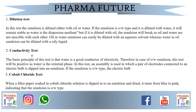Moving to the conductivity test: the basic principle is that water is a good conductor of electricity. In the case of an O/W emulsion, the test is positive as water is the external phase. An assembly with electrodes connected to an electric bulb is dipped in the emulsion; if it is O/W, the bulb will light up. Moving to the cobalt chloride test: filter paper soaked in cobalt chloride solution is dipped in the emulsion and dried. If it turns from blue to pink, it indicates O/W emulsion.